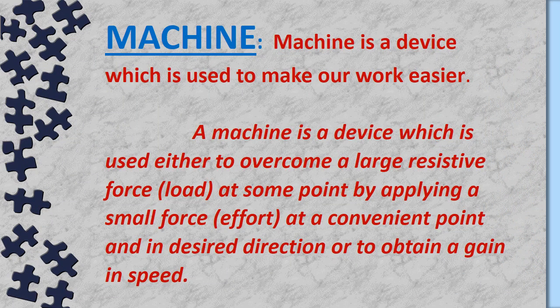In simple language, a machine is a device which is used to make our work easier. For example, in daily life we cut vegetables or fruit with the help of a knife, so a knife can also be treated as a machine. By the name 'machine', it is not necessarily a complicated device — it may be simple also.